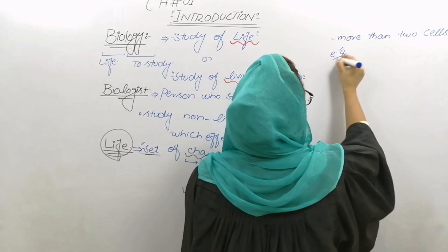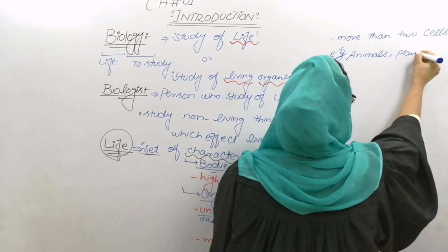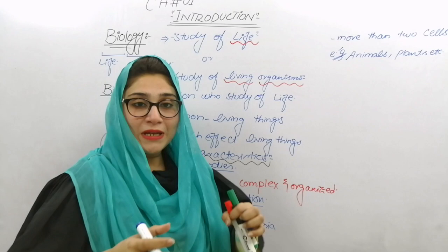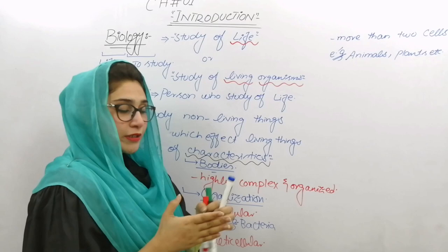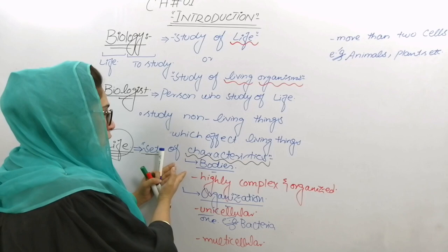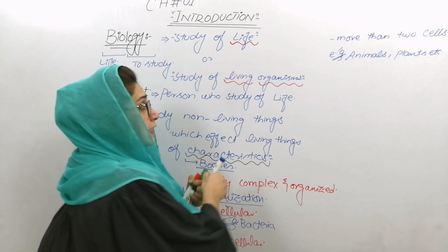Example आती है आपके पास Animals और Plants — Animals और Plants Billions और Trillions of Cells पे consist करते हैं। यह Multicellular Organisms हैं। इनके दो characters हैं: एक है इनकी Bodies के बारे में और दूसरा है Organization — किस तरह की Organization उनके अंदर पाई जाती है।